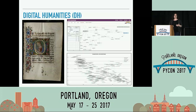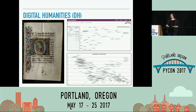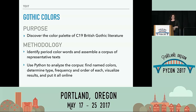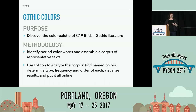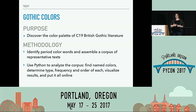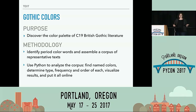What's exciting about this is that not only do we use computers to do humanities research, but we also study the digital as a product of humans. The purpose of our DH project was to discover the color palette of 19th century British literature. Literary scholars have studied Radcliffe's landscape descriptions, but nobody has actually explored her use of color specifically, or the color of 19th century Gothic fiction in a broader sense. We found that nobody has answered these questions partly because no one has even asked them before.